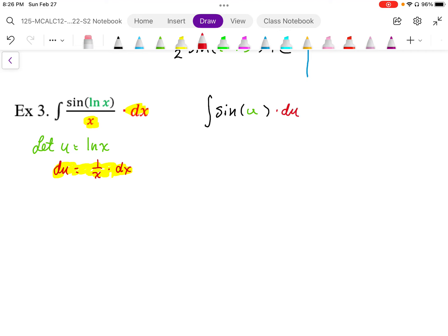And again, now we have an integral with the variable u in terms of a du. So we can just integrate and anti-differentiate this normally. So this becomes negative cosine of u plus c.